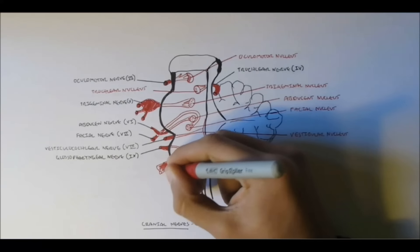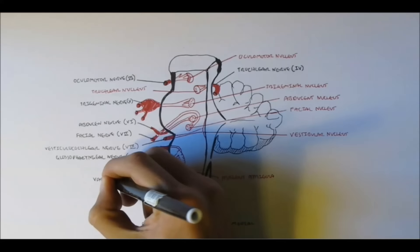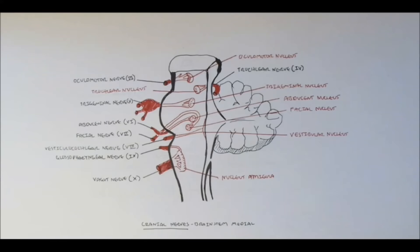The nucleus ambiguus, and it is the vagus nerve, nerve 10.